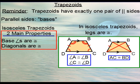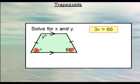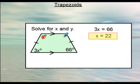Let's do an example — determine x and y. First notice that the two legs are congruent, so the base angles are congruent. The bottom is a base, and it connects the two bottom angles, so those two angles are congruent. Therefore 3x = 66, and solving that gives x = 22. Also, the top side is a base, and it connects the two top angles, so both of those angles are equal to y.